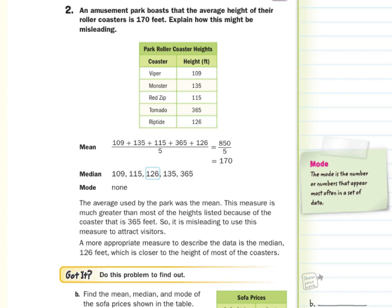As it states, the average used by the park was the mean, 170. This measure is much greater than most of the heights listed because of the coaster that is 365 feet. Notice every other roller coaster is in the 100 foot height range. You just have the tornado that's absolutely gigantic. So it is misleading to use this measure to attract visitors.